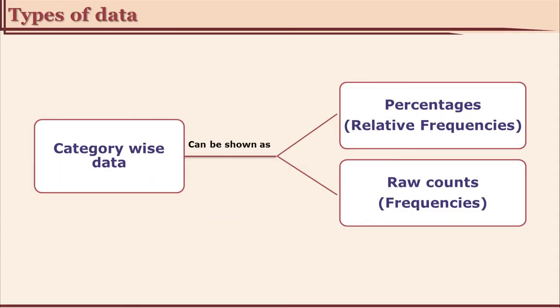The graph can be plotted for non-numeric categories or it can also be drawn using numerical values. Generally, the data can be distributed in categories. For example, when you ask questions like what is your gender — male and female are categories. In which standard are you studying? 7th or 8th standard — these are categories. There is no numerical value; though you may have 50 students from 7th grade and 80 from 8th grade, we are talking about categories. The data in terms of categories can also be represented using percentages, which is called relative frequencies.